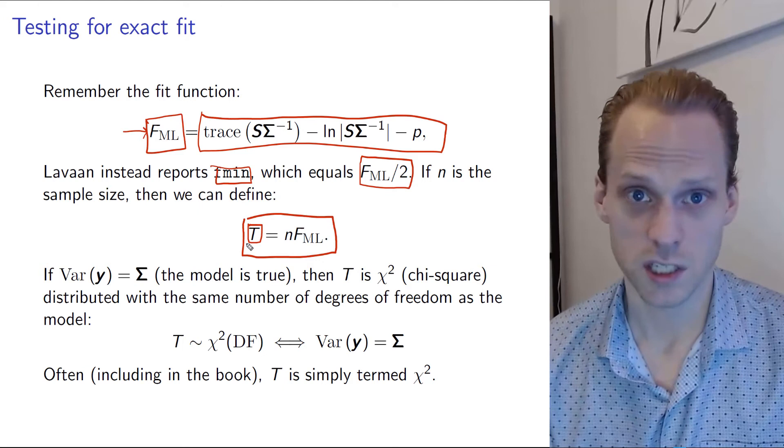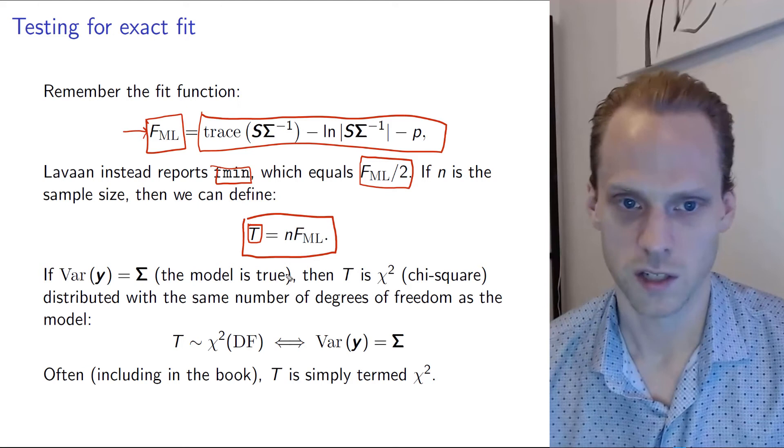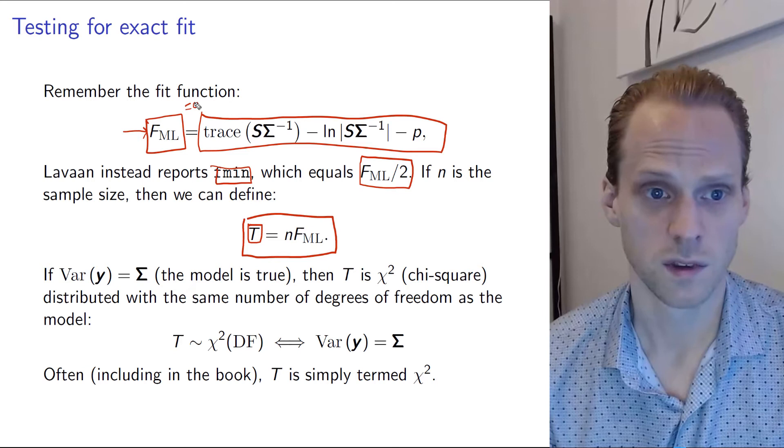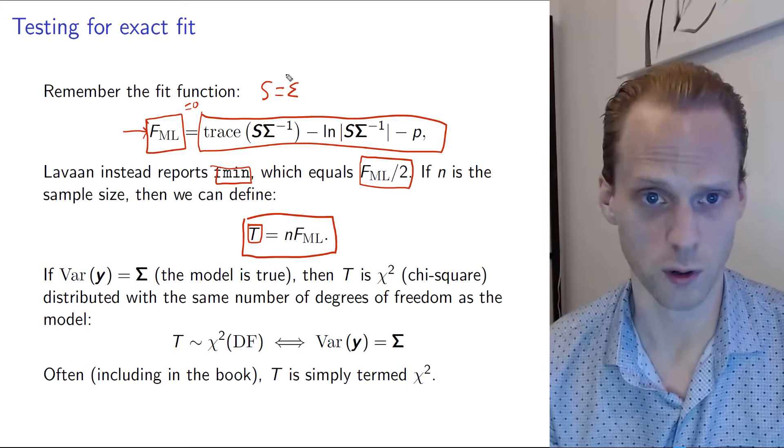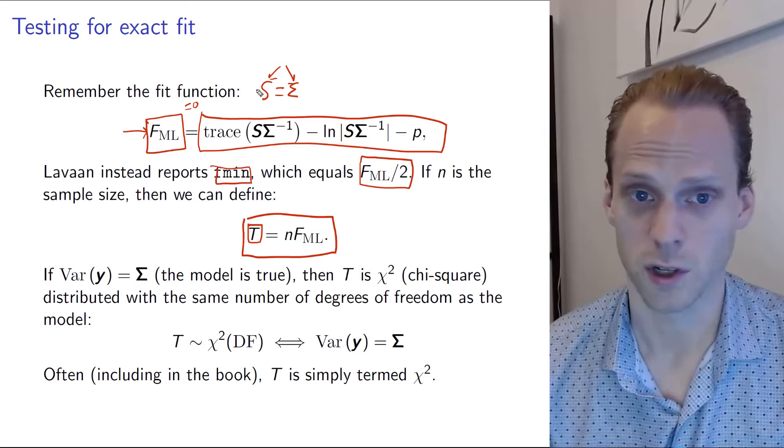So what is this T? This T is a summary statistic, and it's a summary statistic of the fit. So as we saw or as I discussed in the previous lecture, FML will be zero if S perfectly resembles sigma. So we have a perfect model where our implied structure is exactly equal to the observed covariance structure. That would be an ideal world. But your data comes from a sample, so you're not in an ideal world. And by definition this will not be true.